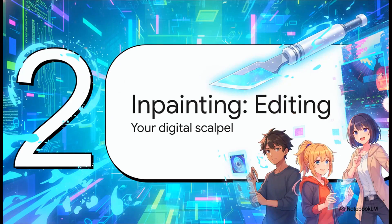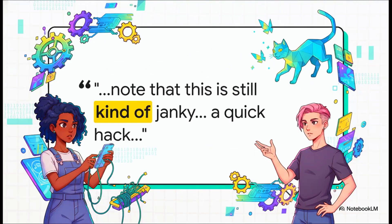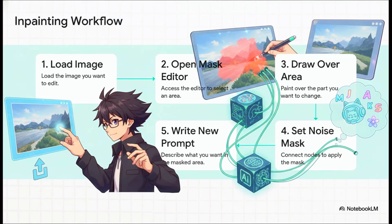So you can direct the scene from the start — awesome. But what if you already have an image you love and you just want to change one little thing? That's where our second power-up comes in: inpainting. Think of it as your digital scalpel for making super targeted, precise changes. The official editing model for Zimage isn't actually out yet, so this technique is kind of a quick hack — a really clever workaround using the model we already have. And honestly, it works surprisingly well. The process is really straightforward: you load your image, open up a mask editor, and paint over the part you want to change. Then you tell the AI to focus on that spot and write a new prompt just for that area.